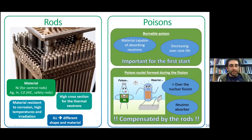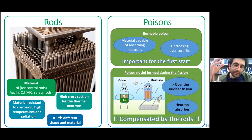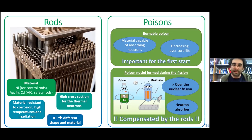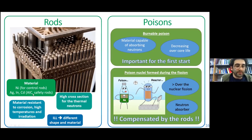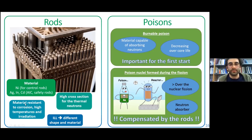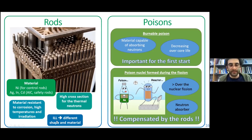Now let's talk about rods. The rods are objects that can absorb neutrons and are movable. We can move them up and down like a valve to adjust the number of neutrons going back to the fuel to make other fission reactions. The material for the control rods is nickel, and for the safety rods it is AIC material. Both materials have a good cross section for thermal neutrons, so they can absorb a lot of thermal neutrons. The material must be resistant to corrosion, high temperatures, and irradiation, because there is a lot of radiation from the core. ILL has different shapes and material rods.